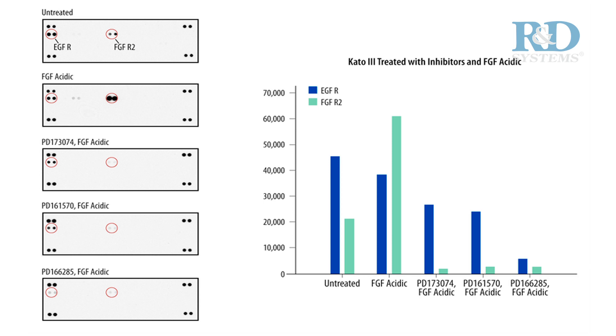Although these inhibitors are known to affect the phosphorylation of FGFR family members, these results demonstrate the utility of the Human Phospho RTK array for monitoring the effect a specific concentration of inhibitor may have on other RTKs, such as EGFR in this case.